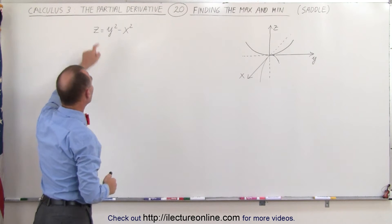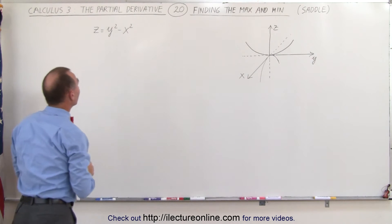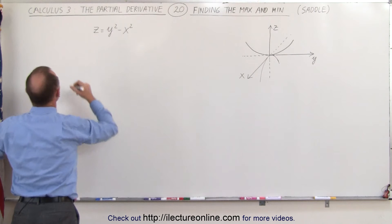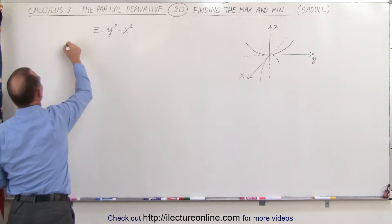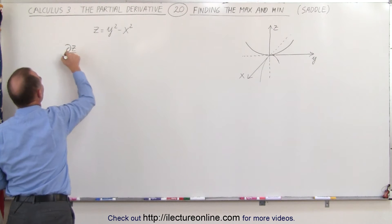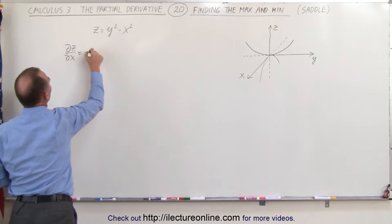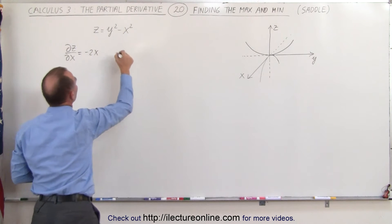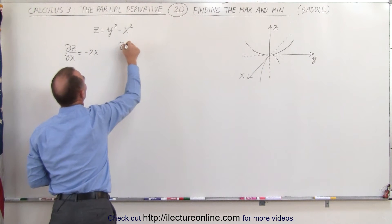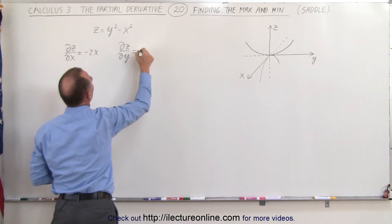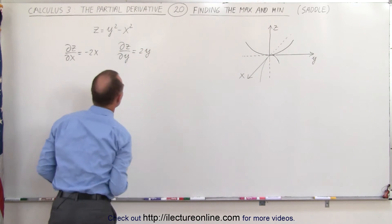Let's take the partial derivative of this function with respect to x and with respect to y. The partial derivative of z with respect to x is equal to negative 2x, and the partial derivative of z with respect to y is equal to positive 2y.